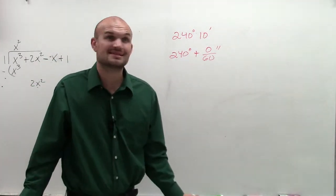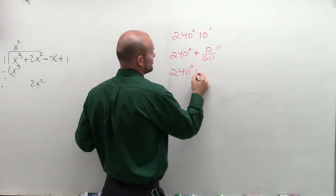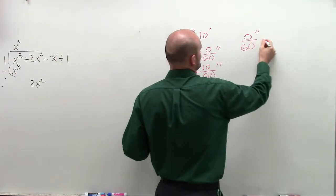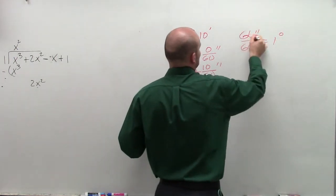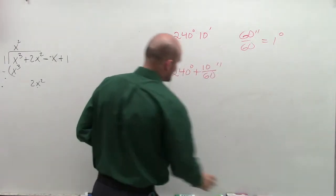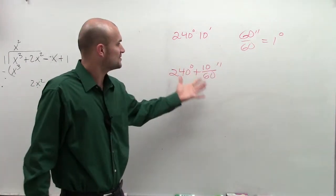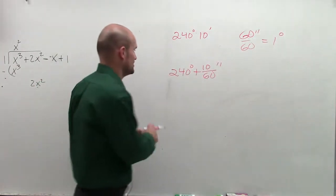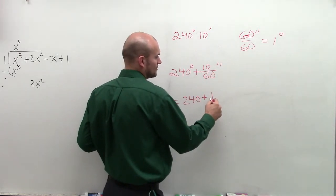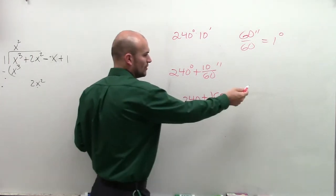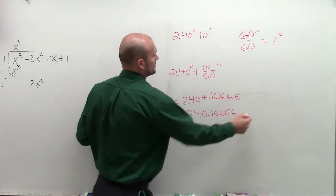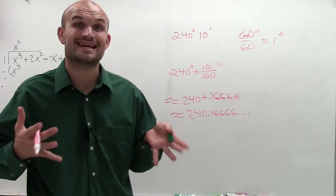Now in this problem, I don't have 0 minutes. I actually have 240 degrees plus 10 over 60 minutes. So 60 over 60 minutes equals 1 degree. I have 240 degrees plus 10 over 60 minutes. Now to evaluate and find the exact value of this as a decimal approximation — because it's going to be a repeating decimal — 10 divided by 60 gives me 0.16666 repeating. So 240 plus 0.1666 is going to be approximately 240.1666 repeating. When doing this, you just need to remember: it takes 60 minutes to make 1 degree. Whatever minutes you have, put that over 60 and add it to your degrees.